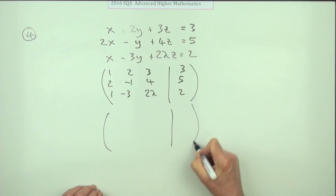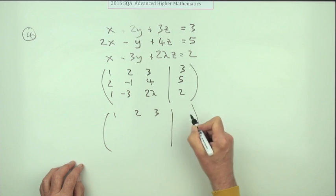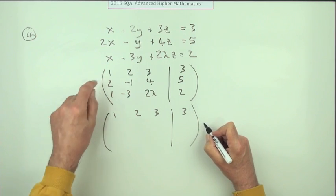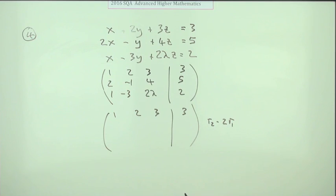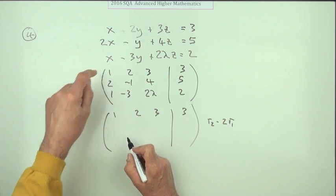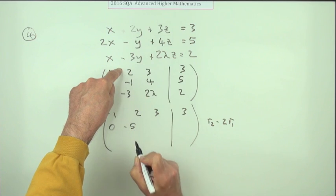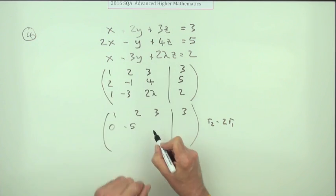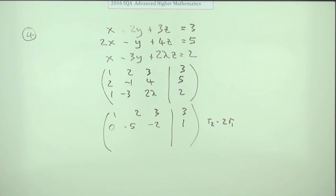Then operate on it the usual way. Let's get both of those down to zeros, leaving this one alone because it's quite nice with its 1. For this one, if we take row 2 and subtract 2 lots of row 1, that becomes row 2. So 2 take away 2 is 0, negative 1 take away 4 is negative 5, 4 take away 6 is negative 2, 5 take away 6 is negative 1, if we want to get it right.